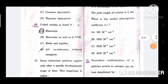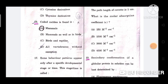Question number 16: Coiled cochlea is found in? The correct answer is option A, mammals.